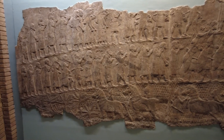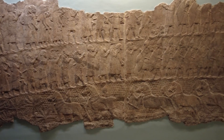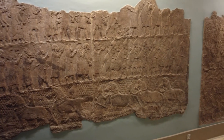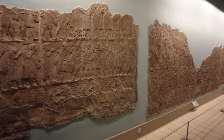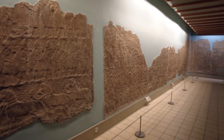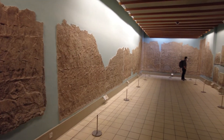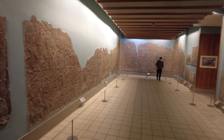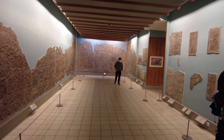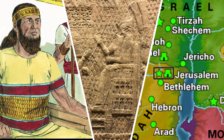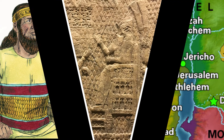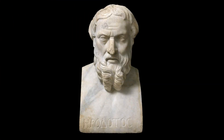Sennacherib never claims to have taken either Hezekiah or Jerusalem, but simply that he had surrounded both. This silence is very unusual and strongly implies that something had gone very wrong towards the end of the campaign that required him to leave the task unfinished, during what had been up until that point a very successful campaign for the Assyrians. Sennacherib would instead focus on his successful siege and victory at Lachish during the campaign. If he had taken Jerusalem and Hezekiah, it would have been logical for him to have focused on the capture of Judah's king and capital city rather than on the capture of Lachish, which implies that he never took either Hezekiah or the city of Jerusalem.